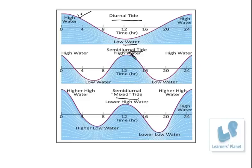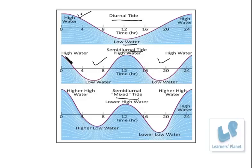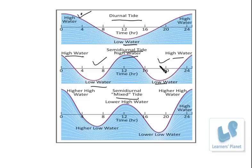In other areas, tides are semi-diurnal — semi meaning two — with two high and two low tidal points. There will be a condition when the water will be high, then low, then high again, then low, then high. So this is called semi-diurnal, meaning with two high and two low tides.